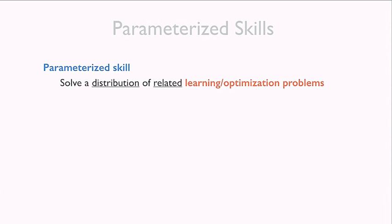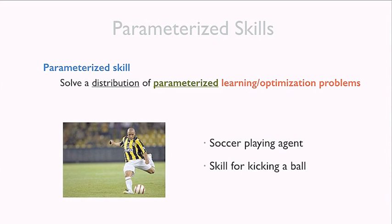In this work we are interested in one particular type of skill called a parameterized skill. This is a mathematical procedure that allows us to solve distributions of related learning or optimization problems. We say these problems are parameterized because we assume it's possible to describe your current objective via a set of parameters — numbers.